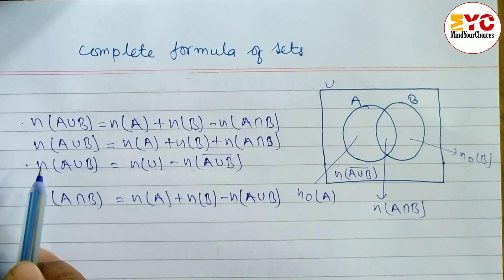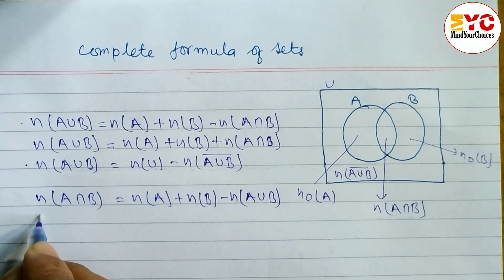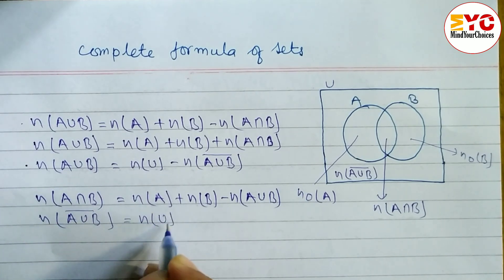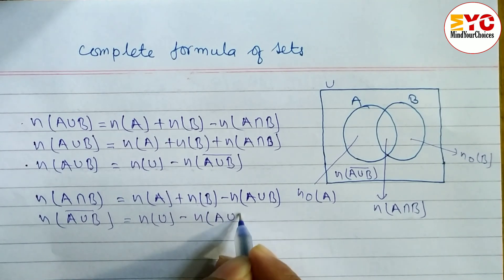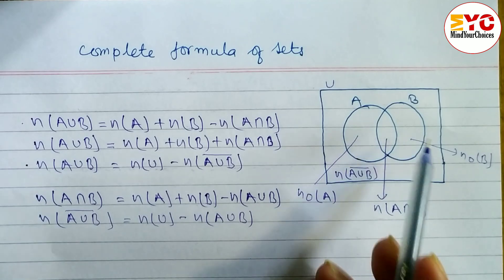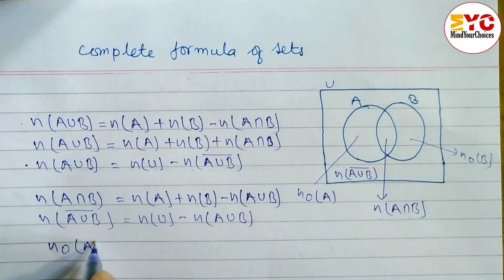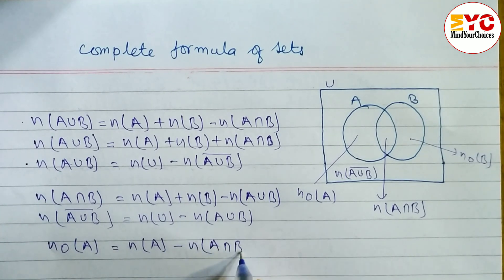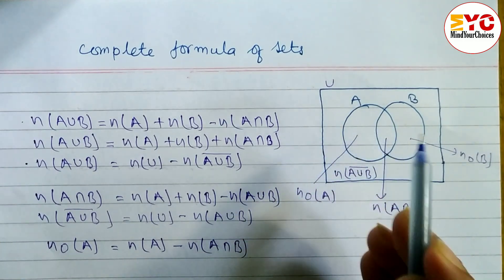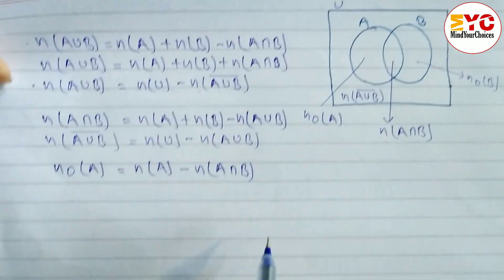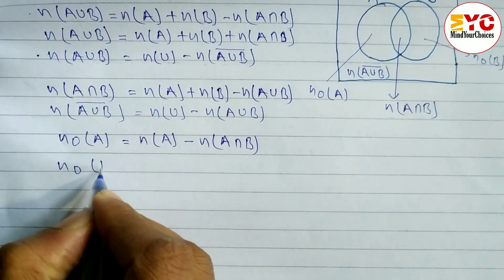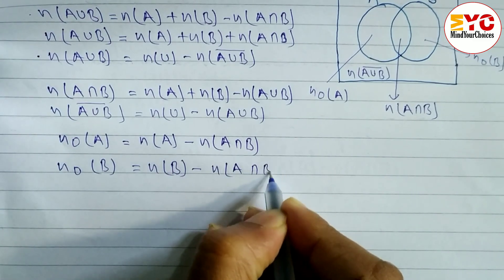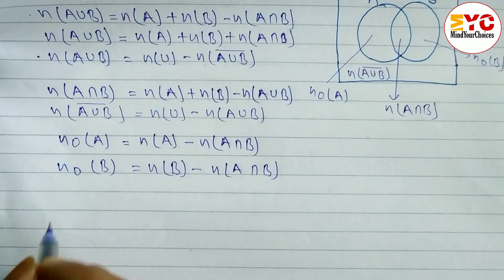Similarly, to find the formula of n(A union B) complement, we take the union to the right side, so the formula is: n(A union B) complement = n(U) minus n(A union B). To find only A, the formula is: n(only A) = n(A) minus n(A intersection B) — from the whole part we subtract the intersection. Similarly, only B: n(only B) = n(B) minus n(A intersection B).